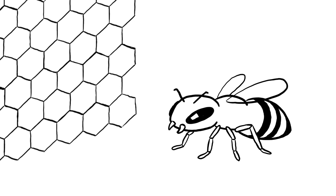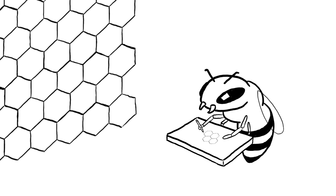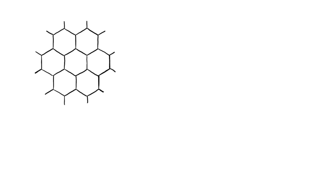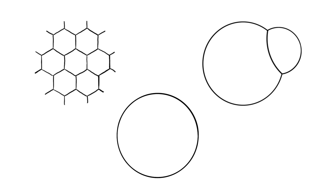Bees have been making honeycomb for, what, millions of years? And yet not once has a bee sat down and proved that hexagons are the most efficient solution. They just know. You would think that something in the physical world that seems to be common sense, like honeycomb or the shape of a bubble or the shape of two bubbles, would come from an easy fundamental mathematical fact.